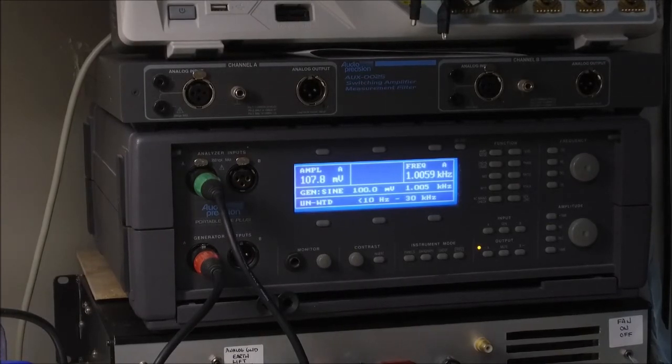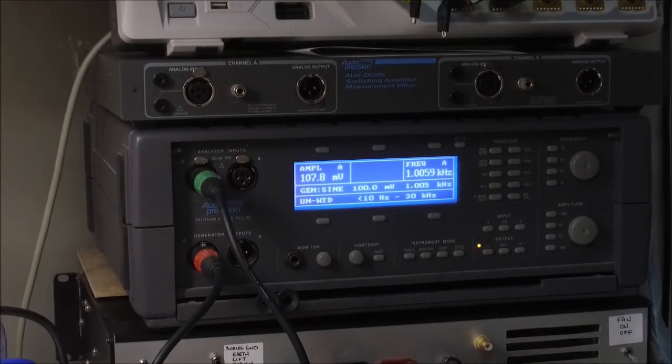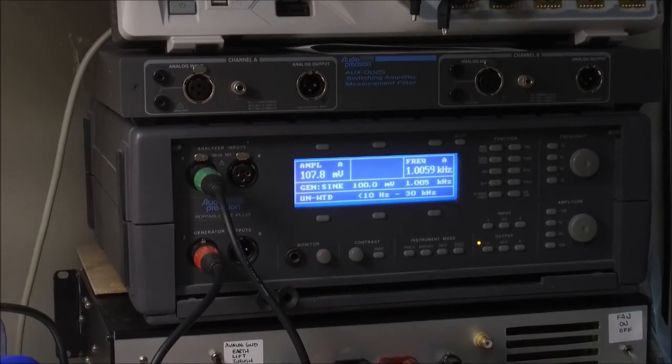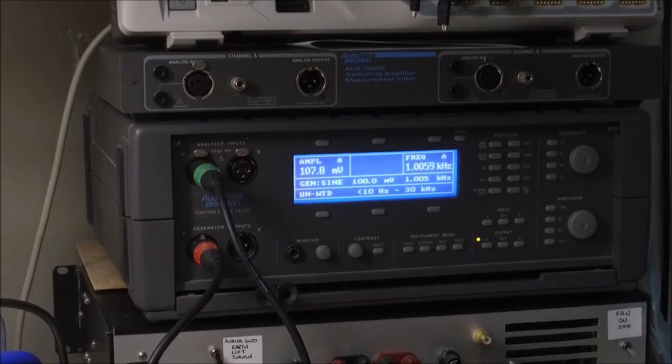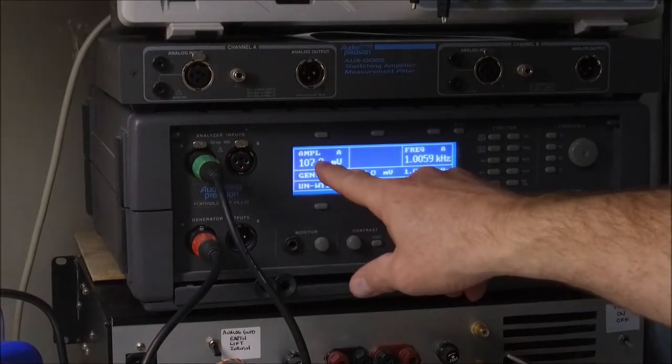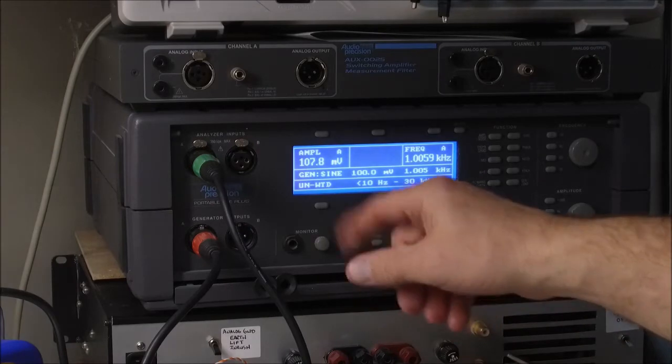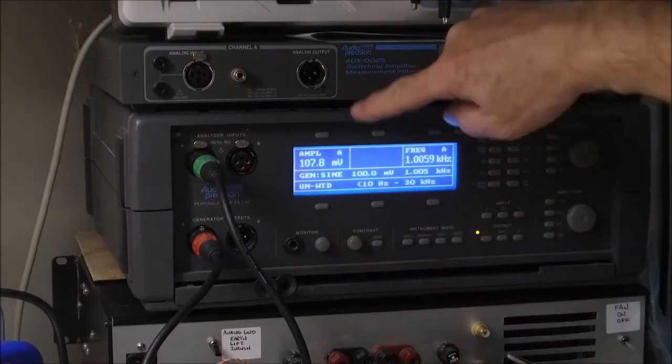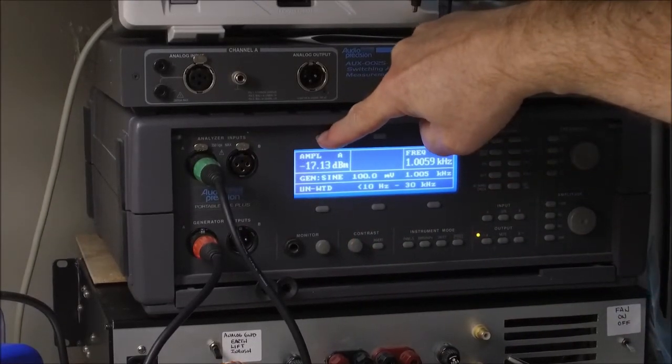So this is the gain of the device. This is with the volume control in the maximum counter, I mean, maximum clockwise position. I'm putting in about 100 millivolts. I'm getting about 107 millivolts out, close to 108 millivolts. And if I go to dB gain, not a whole lot of gain.